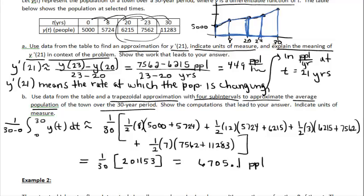The 0.1 people might bother some of you, but unless they tell me to round to the nearest person, I'm not going to. The answer is an average population, and that number certainly seems to fit within the range of the given data values, so it all looks good.